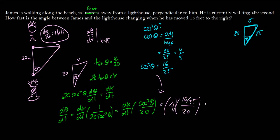So this is going to be equal to 16 over 125, which is the same thing as 0.128 radians. So that is how fast our lighthouse angle is changing to James when James is 15 feet to the right of where he started.